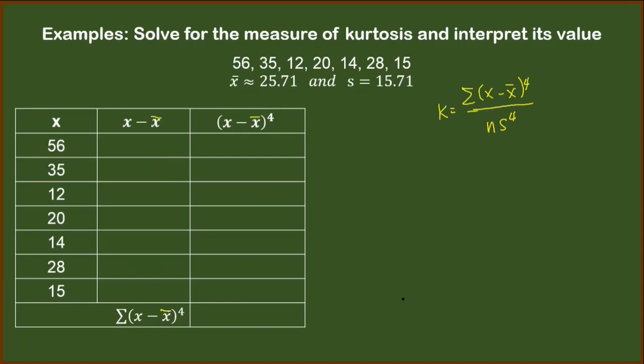So basically, what we are doing here is each value, 56, 35, 12, 20, 14, 28, and 15, each of them will be subtracted by the mean of 25.71. I suggest you grab your calculator and do this with me.